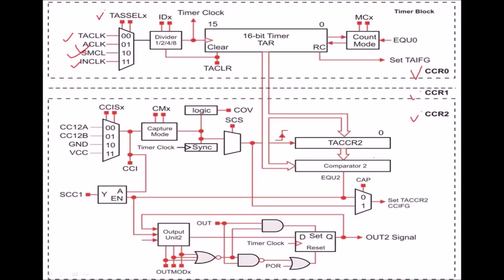Here the CCR2 model registers are shown. As per the delay, the user will calculate the count, and that count will be loaded in the TACCR2 register. After each clock cycle, the count of the TAR register will be incremented by 1. This comparator will continuously compare the contents of the TAR register with the TACCR2 register. When there is a match between these two values, the flag bit will be set to 1. Two flags are available: the CCIFG flag and the TAIFG flag. In programming, we can use any of these flag bits.